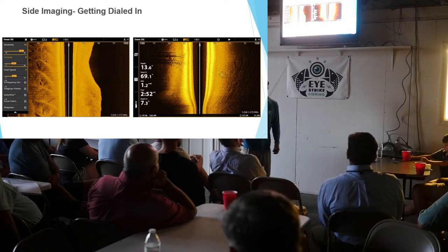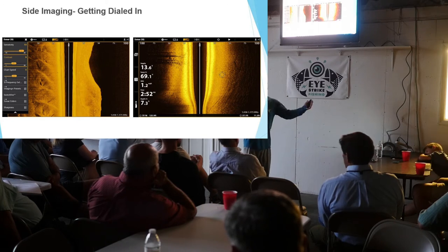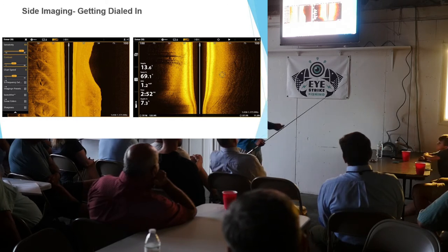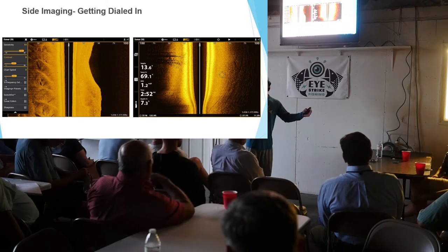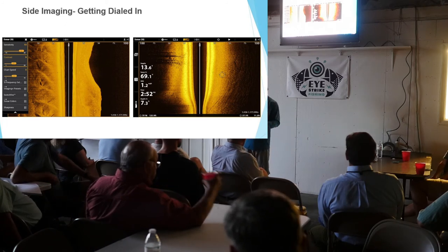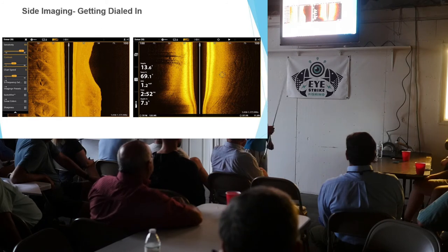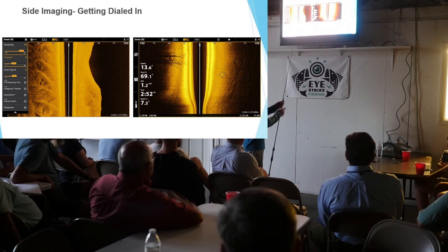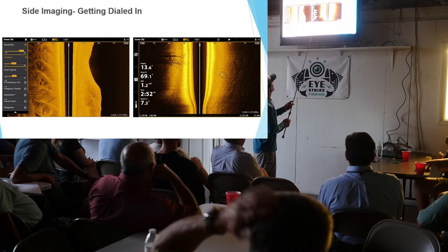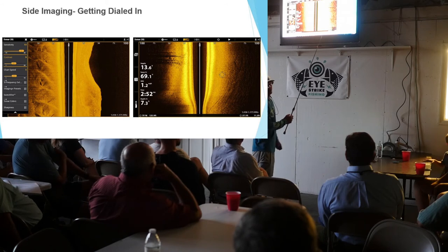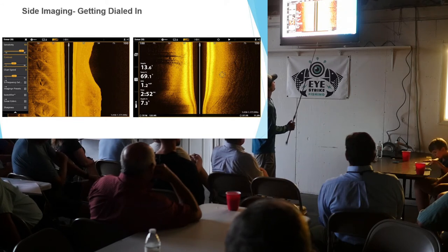Schools of bull reds, tarpon — you name it. The bigger the fish, the easier it shows up. I get asked if it shows panfish — yes, I have buddies getting images of crappie. You can get smaller fish along with bigger fish, but bigger fish show better. I'm getting a decent image on my left side, but on the right side it's much clearer — you can see the difference with the oysters. The structure reads much clearer on that right side with my transducer.